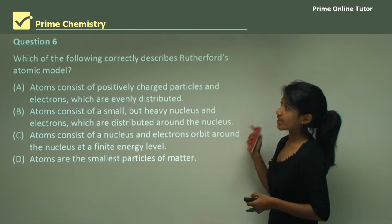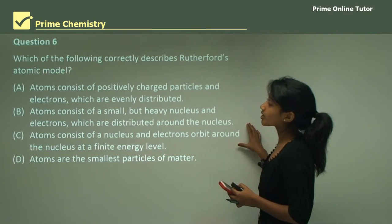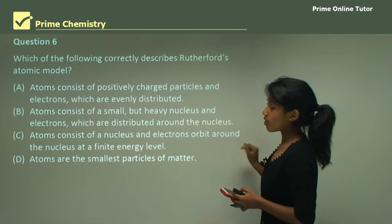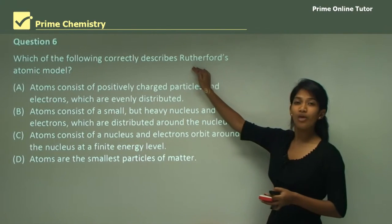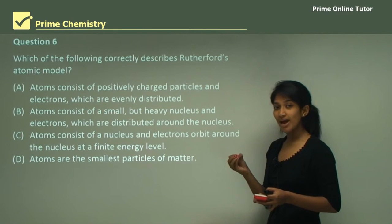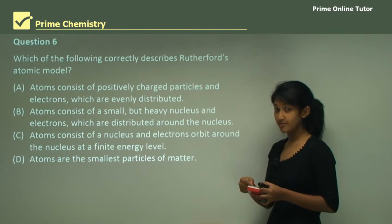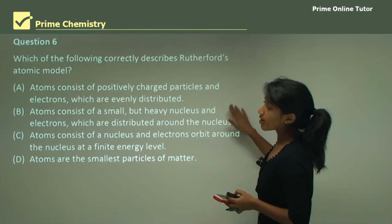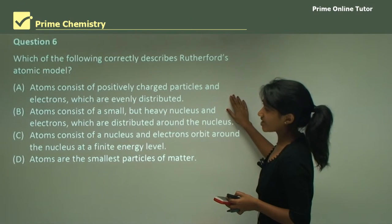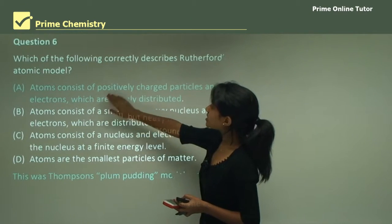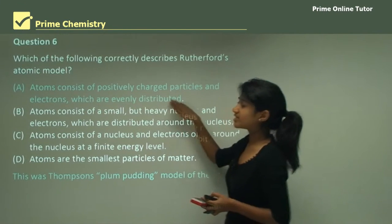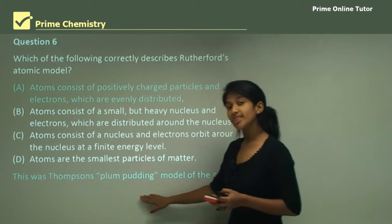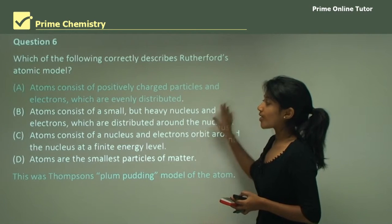Looking at question six, a multiple choice question: which of the following correctly describes Rutherford's atomic model? Rutherford said that all mass and positive charge were concentrated in the middle of the atom. Option A says positive charge particles and electrons were evenly distributed — that was not his proposal; that was JJ Thomson's plum pudding model. So A is not the answer.